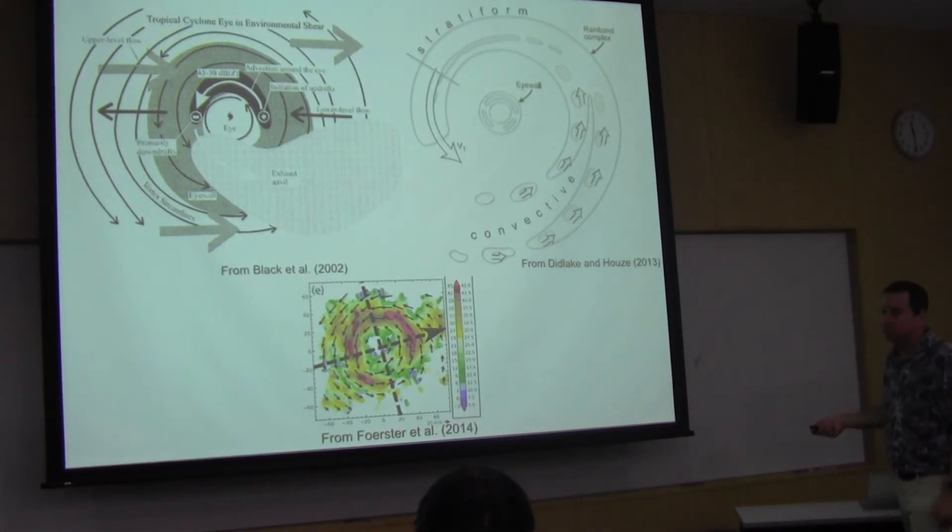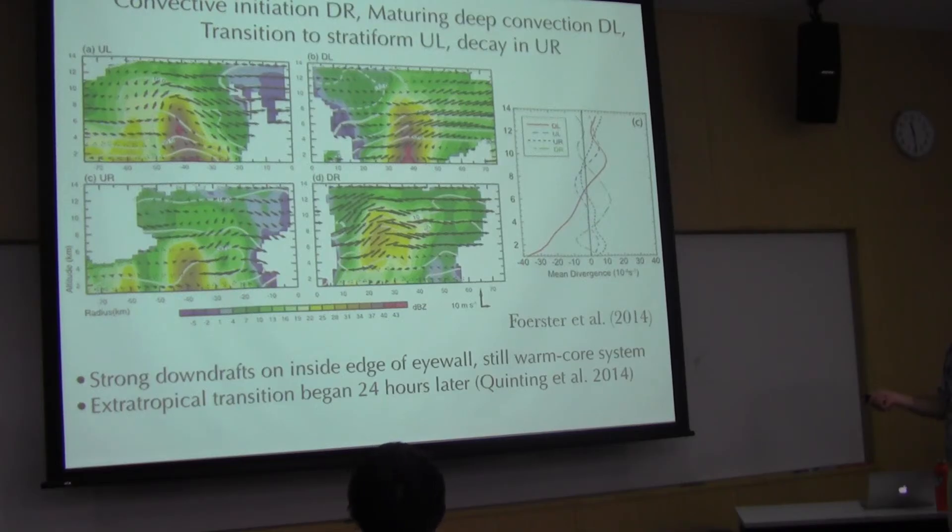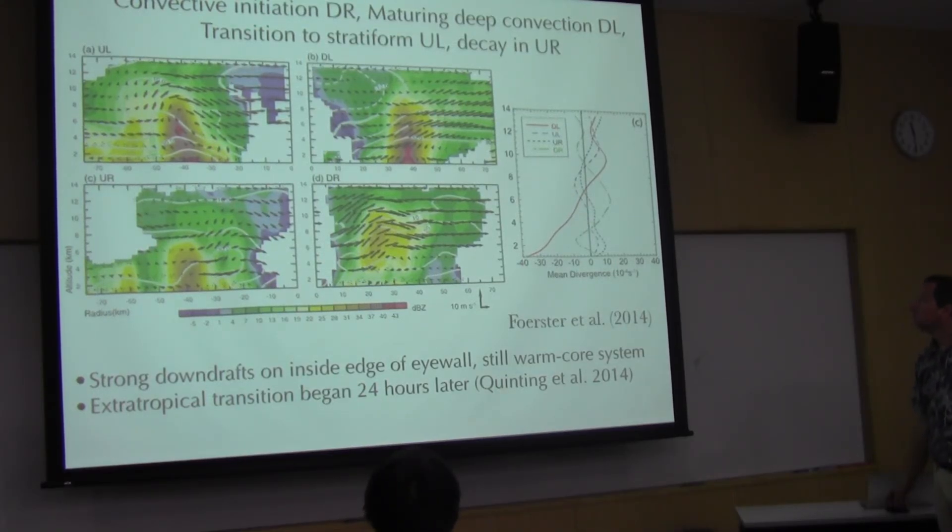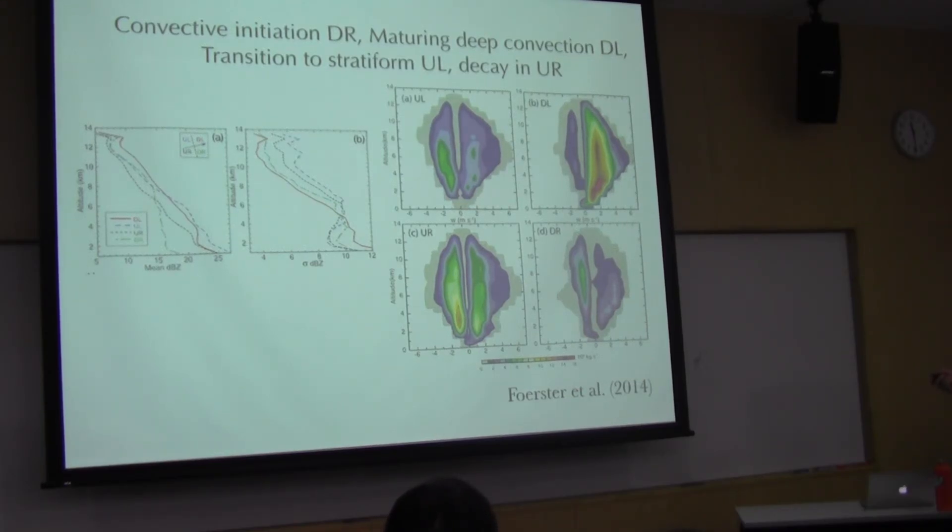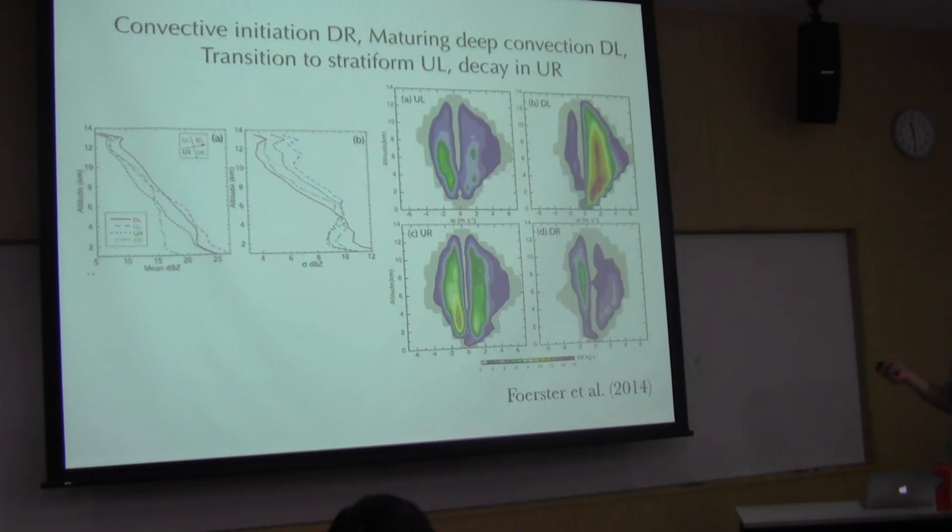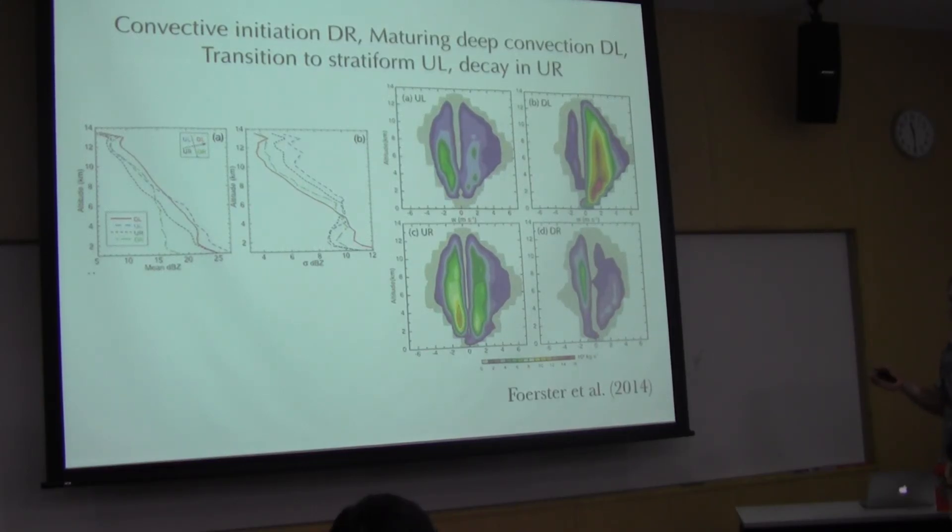Could you show the next slide? In this figure, downshear right has a large divergence in the middle troposphere. In the CFAD data, downshear right is a large downdraft region in the middle troposphere. But in the schematic illustration for quadrant separation, the downshear right is formation of the convective region. But the high reflectivity is much more downshear left. There's a bit of a shift.